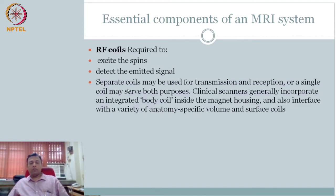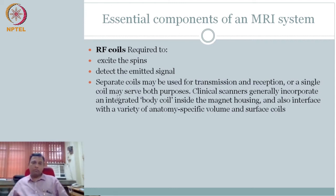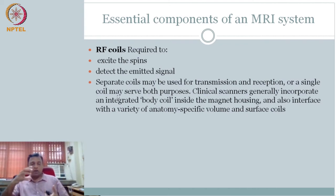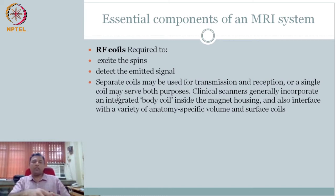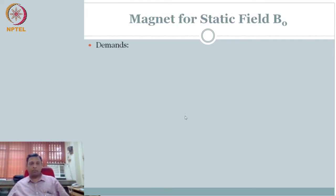The next component is the RF coil. You need the RF coil to both excite and then detect the transverse component. There are several ways to do it — you could have a transmit coil and receive coil separately, but typically it is a hybrid. Most systems have a body coil built in, but on top of that, for higher signal-to-noise ratio, they also use anatomy-specific coils. If you go for a scan of your elbow, you can have a coil specifically there. They might also put a surface coil on the knee to understand it better. Generally there is a body coil that comes built in with the scanner system.